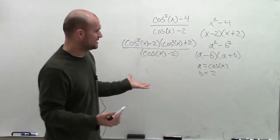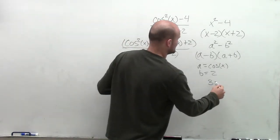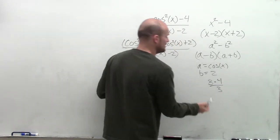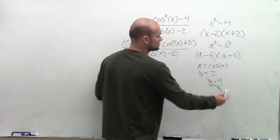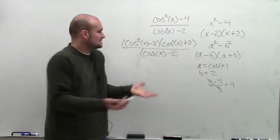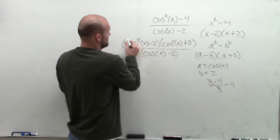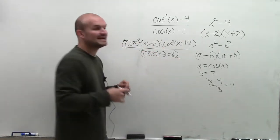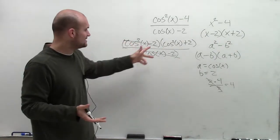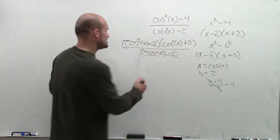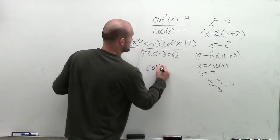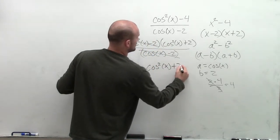Just like if I was going to have 3 times 4 divided by 3, since my 3s are going to divide out to 1 just leaving me with 4, with binomials it's the same thing. These are exactly the same, so they're going to divide out into 1. These two terms divide to 1, just leaving me with cosine squared of x plus 2.